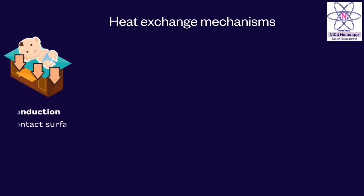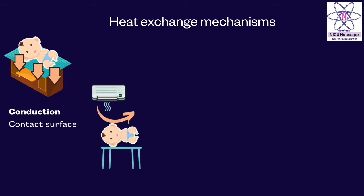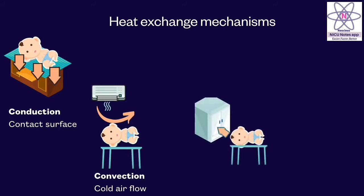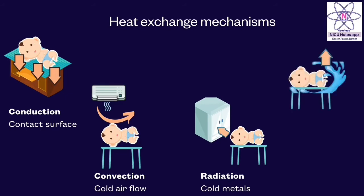Heat exchange mechanisms are four types. When the baby's contact, that is conduction, heat loss happens, or from the AC when air flows, convection heat loss happens, or when the baby is near a cold surface, radiation heat loss happens, or when the baby is wet, evaporation heat loss happens.